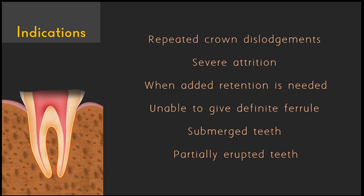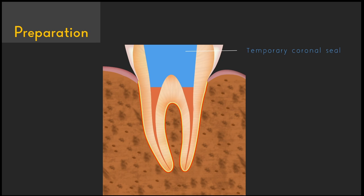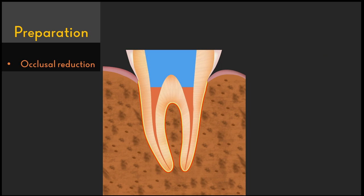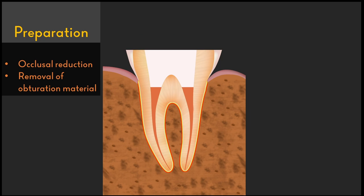Let's see how to prepare a tooth for an endocrown. After completing root canal treatment and sealing with a temporary coronal restoration, the first step is to do the occlusal reduction. In most situations the occlusal height will already be very less, so we should make sure that around two millimeters of tooth structure remains above the gingival margin — which will be more than enough to give a good endocrown.